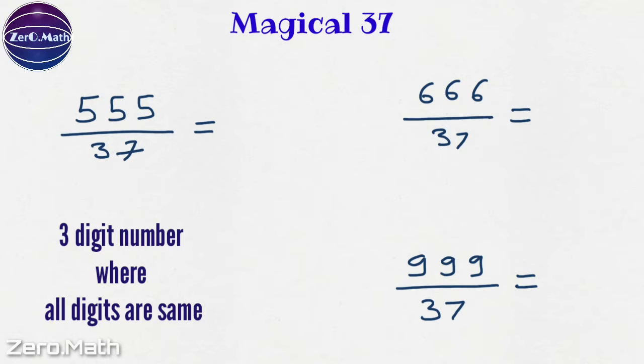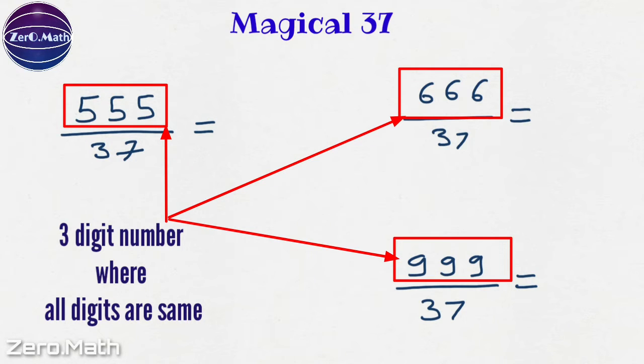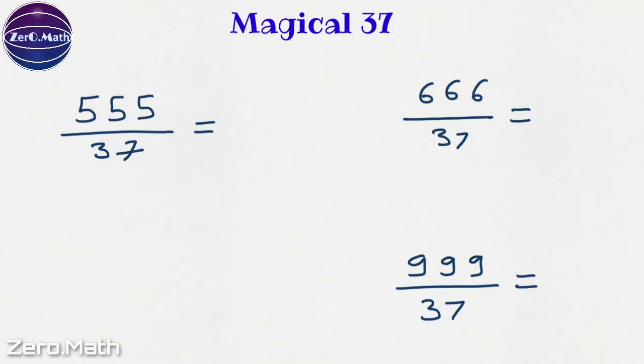Let's take any 3 digit number in which all the digits are same and divide it by 37. For example, 555 by 37, the answer would be 15. Now how to get that answer? It is simply the sum of digits of this number 555. So 5 plus 5 plus 5 equals 15.